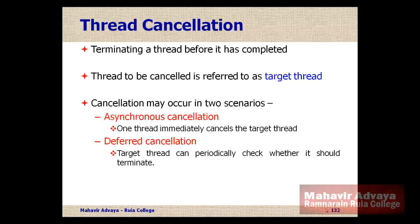Cancellation may occur in two scenarios: asynchronous or deferred cancellation. In asynchronous cancellation, one thread immediately cancels the target thread — for example, once a database search result is found, the searching threads are immediately cancelled. In deferred cancellation, the target thread periodically checks itself whether it should continue execution or be terminated.